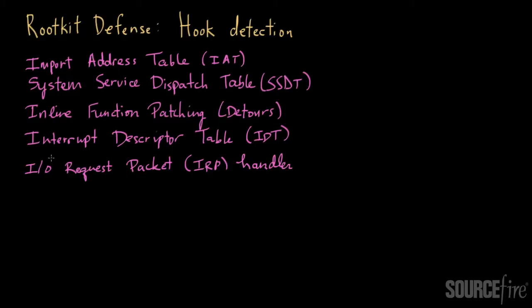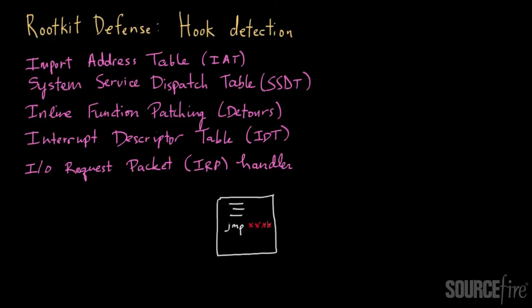Let me describe one particular way in which you can identify a hook. A hook is basically a situation in which you place a branch instruction. So imagine you've got a piece of code with a few lines, and somewhere in there you have a jump instruction. What the rootkit will do is modify that instruction and put a malicious address instead — a jump to a malicious address — which points to the rootkit's code.